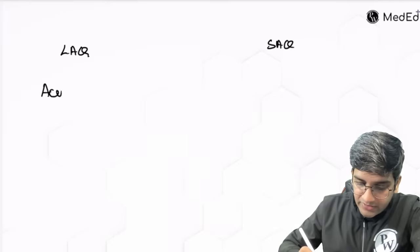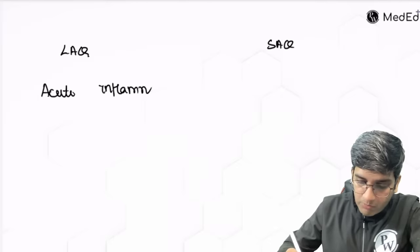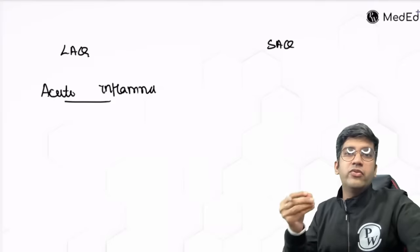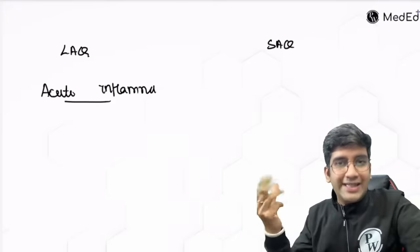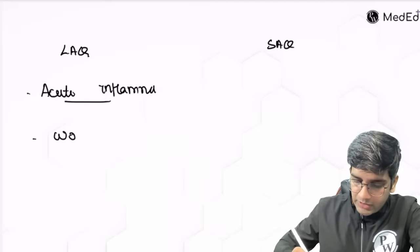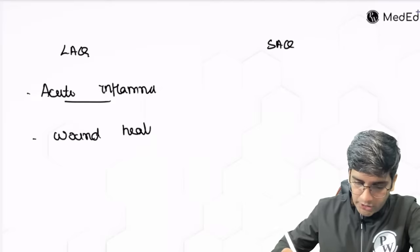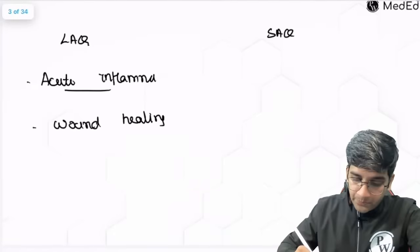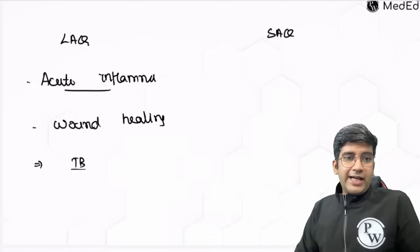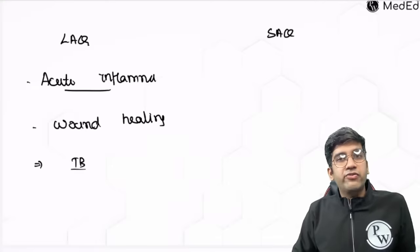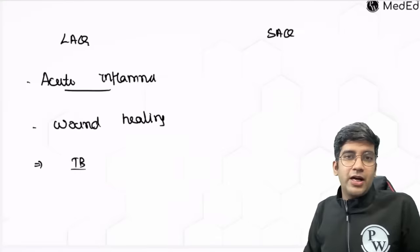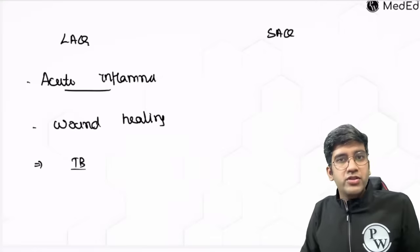The entire acute inflammation, if they ask, has a probability of coming as a long answer question. Most of your long answer questions are stemmed — you might have something like a mosquito bite or a bacterial infection and then they ask you to elaborate what happens in acute inflammation. There is also a possibility that wound healing can come as a long answer question. Most importantly, since we are in the acute inflammation chapter, there is a very high possibility tuberculosis can come as a long answer question. TB is something every doctor in our country should know — primary tuberculosis, secondary tuberculosis, pathogenesis, diagnosis — everything is required.